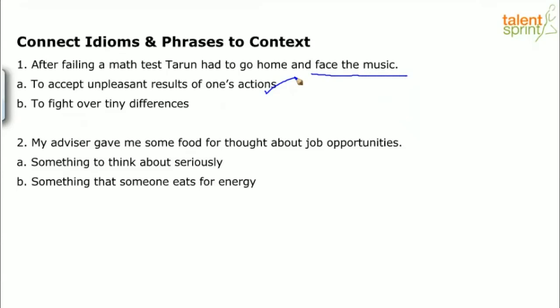Let's look at the second context: 'My advisor gave me some food for thought about job opportunities.' Obviously the idiom is 'food for thought.' Out of the options, it is 'something to think about seriously,' which is correct. The context helps you understand the meaning the idiom is conveying.